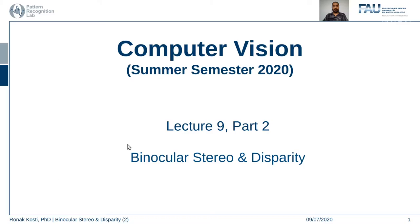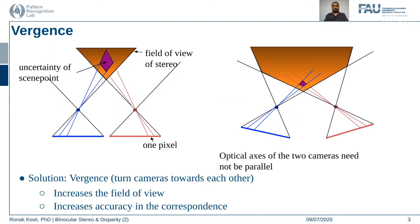Hello everyone and welcome back to the Computer Vision lecture series. This is lecture 9 part 2. In this lecture we are going to talk more about correspondence problems.